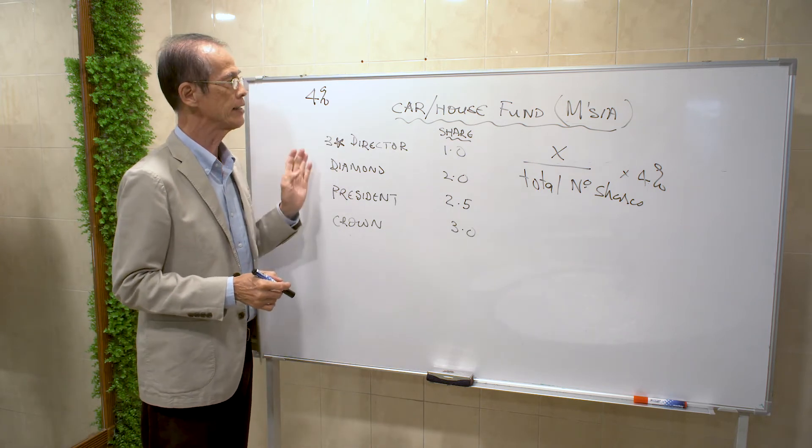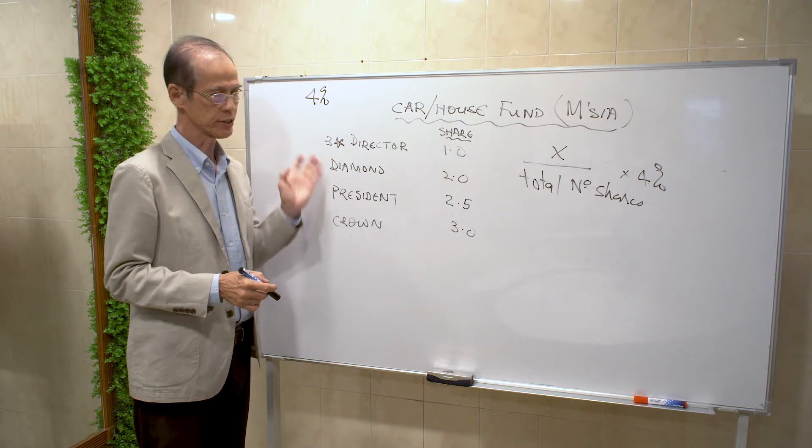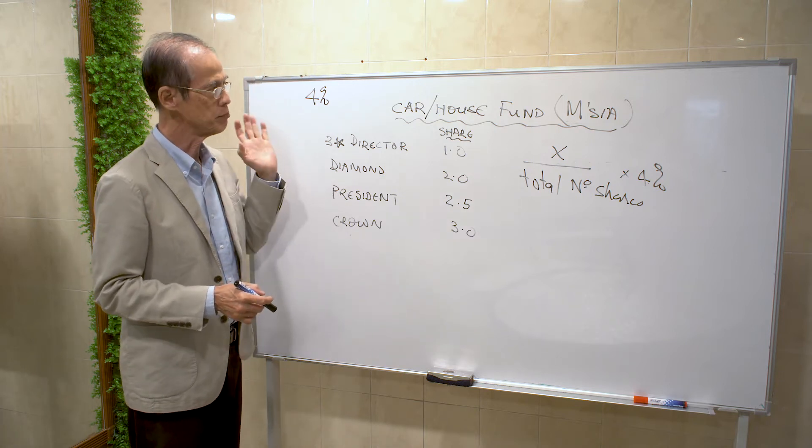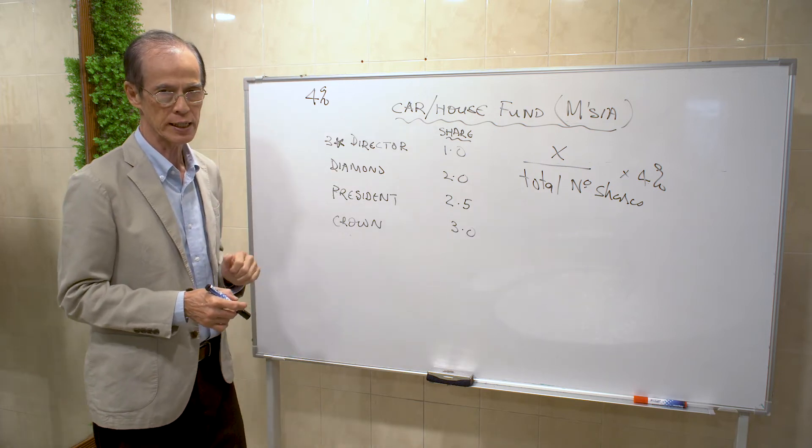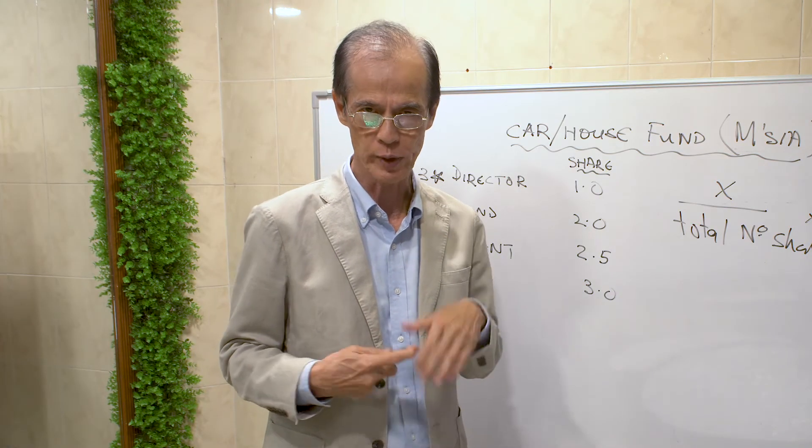And as you go higher into the diamond, president, and crown area, you get more in terms of the car and house fund. Be able to enjoy a better lifestyle with the extra money that you get.